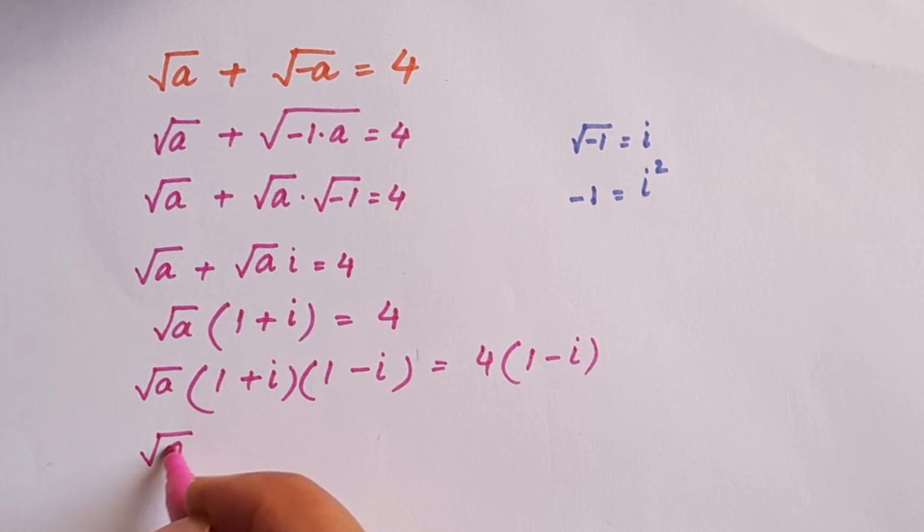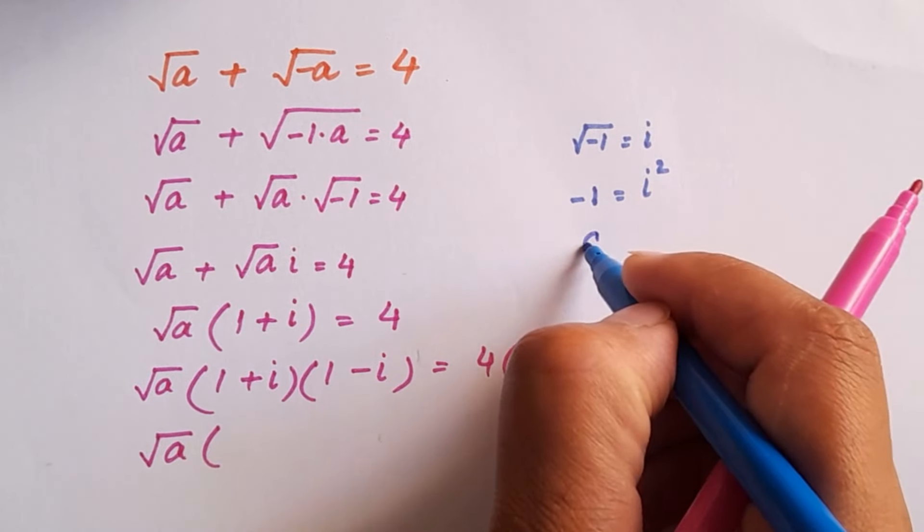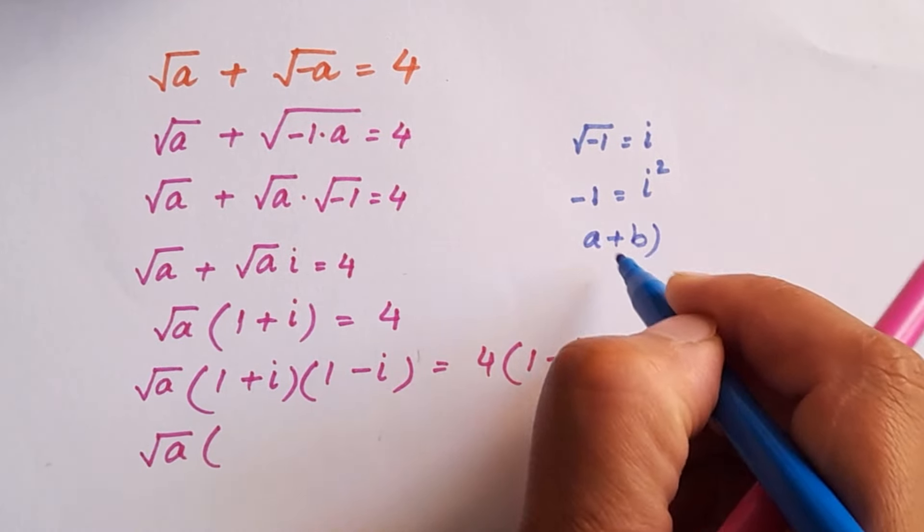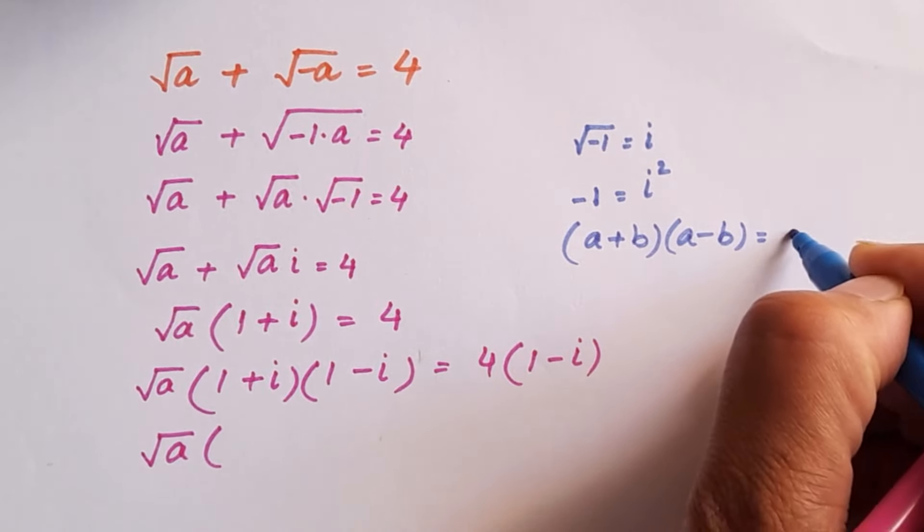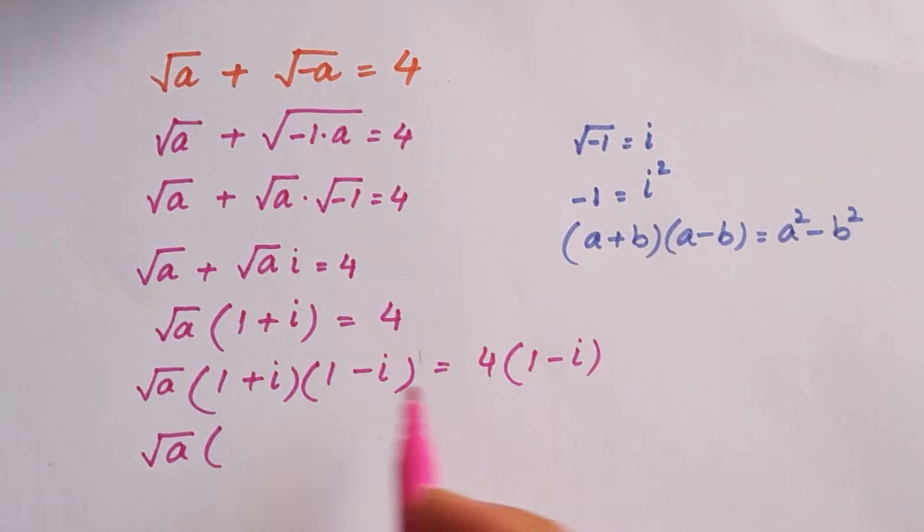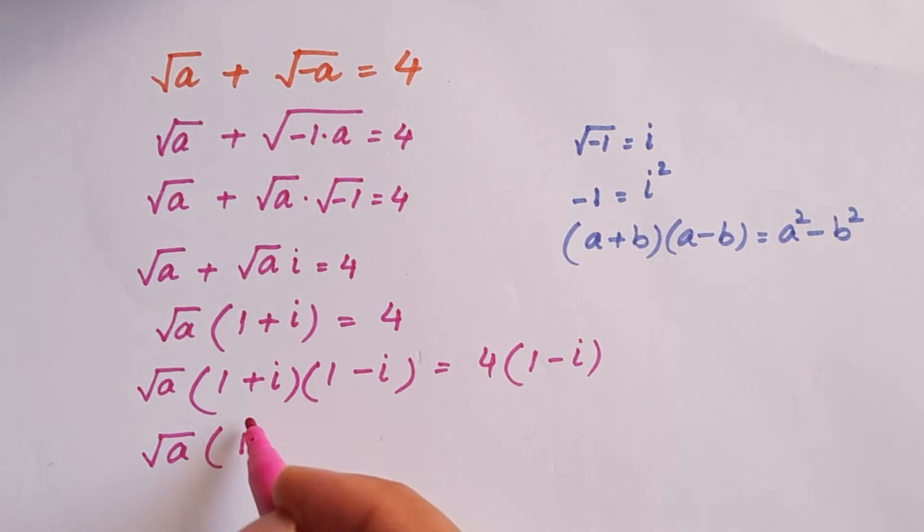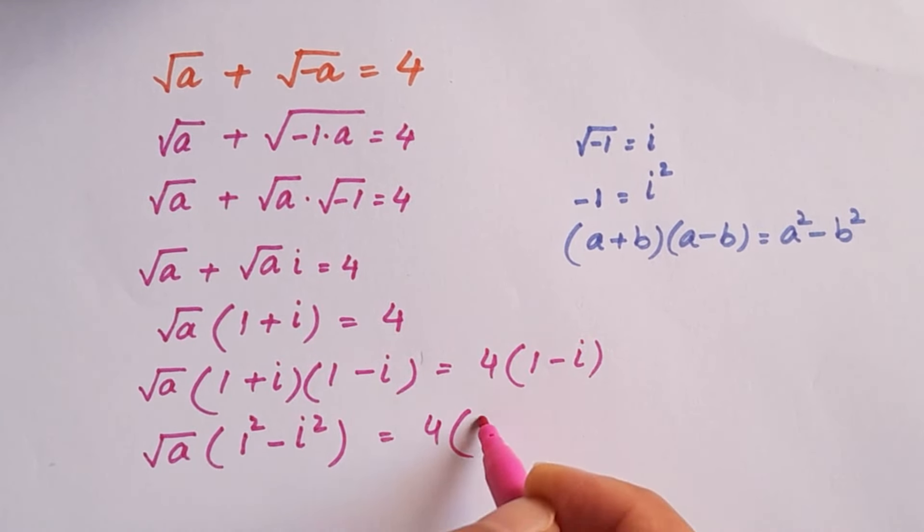Root a, now this becomes an algebra identity which is a plus b times a minus b. And that is equal to a square minus b square, difference of square formula. So we can write this 1 plus iota times 1 minus iota as 1 square minus iota square, right hand side as it is.